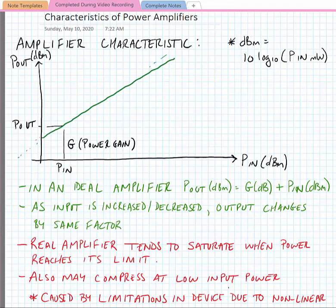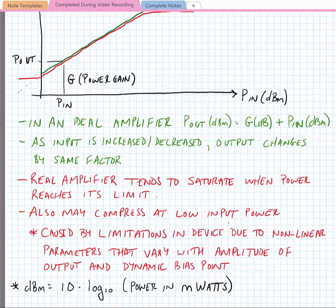If we look at a real amplifier, what tends to happen is the characteristic tends to saturate at high power, and it might also compress a bit at low power. The reasons for this saturation behavior tend to do with the supply voltage — the supply voltage may be limited, and that limits the voltage swing of the amplifier. Also, internal device characteristics may limit or saturate as internal currents become large.